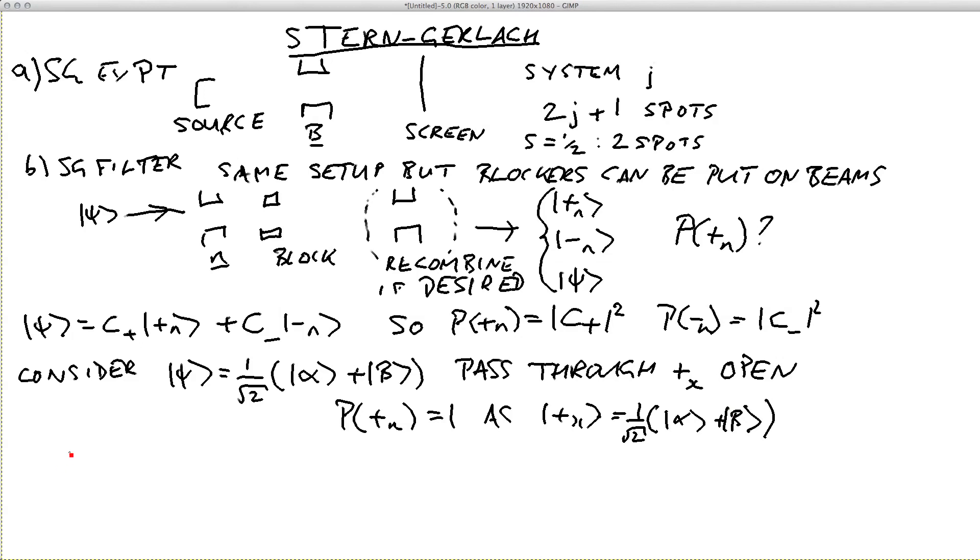You can play games with two or three filters. Let's think about what would happen if we had a Stern-Gerlach filter in z with just the plus open, then a Stern-Gerlach filter in x, and then a Stern-Gerlach filter in z but with the minus open.